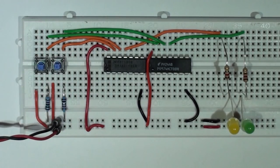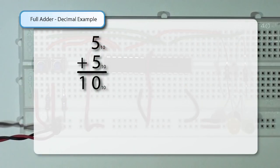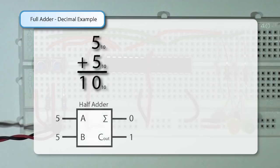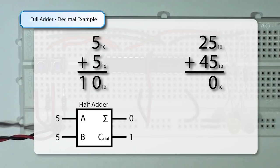Up to this point I have been talking about half adders. So what is a half adder exactly? To answer that, we have to determine what is a full adder. I'm going to go to a decimal example of addition. When we added 5 plus 5, we got a sum of 0 and a carry of 1 — two inputs and two outputs. If we go to the right-hand example, we're now adding 25 plus 45 in decimal, and we start with the ones column.